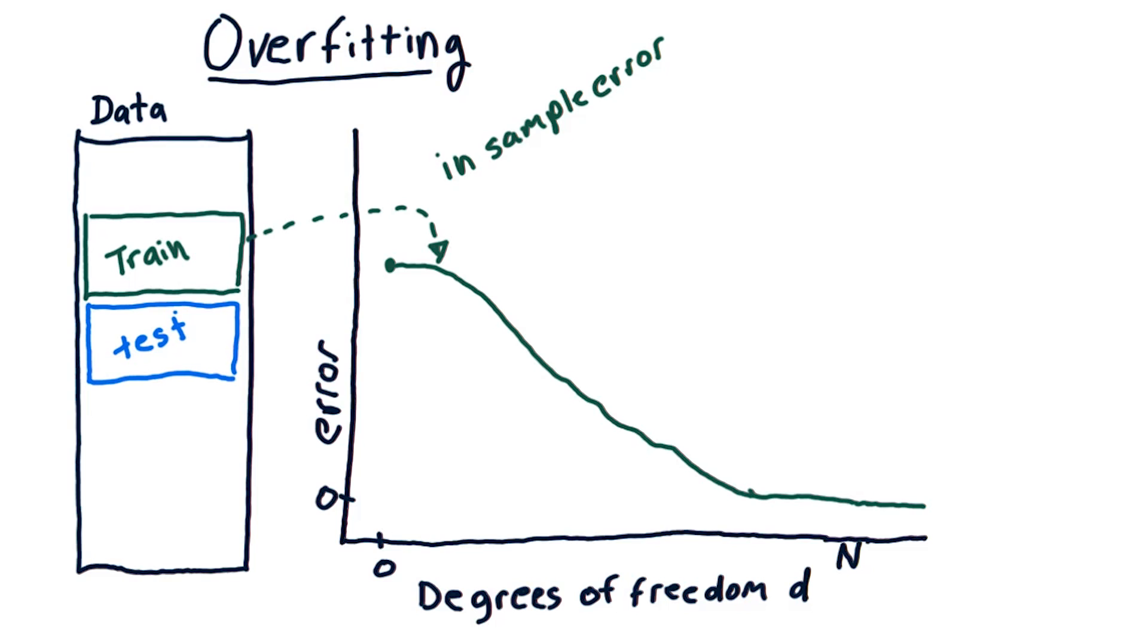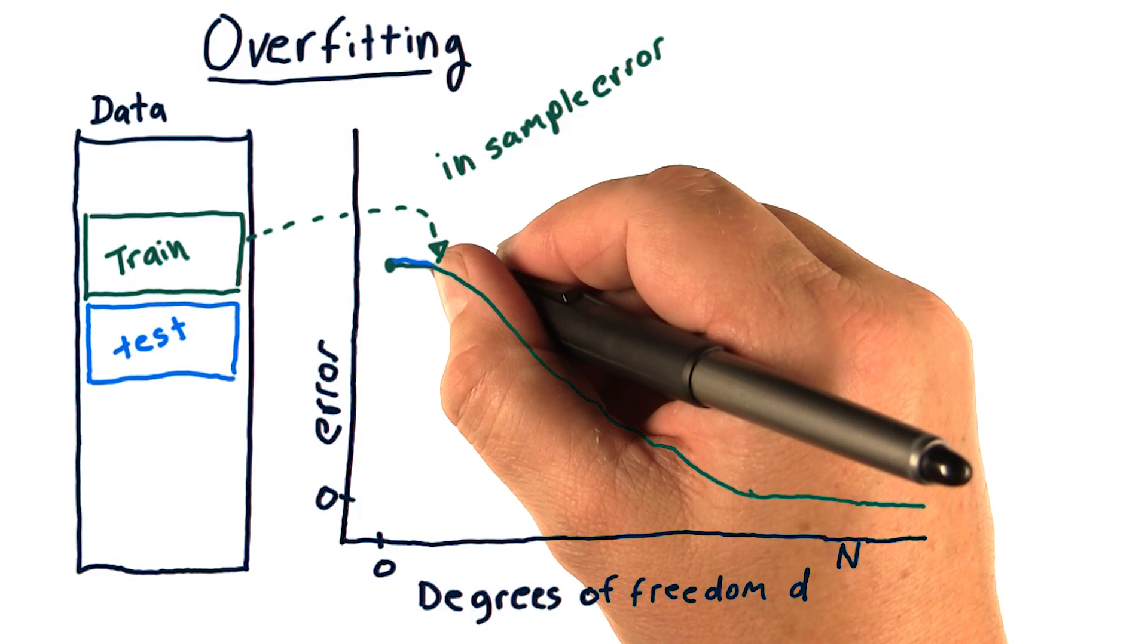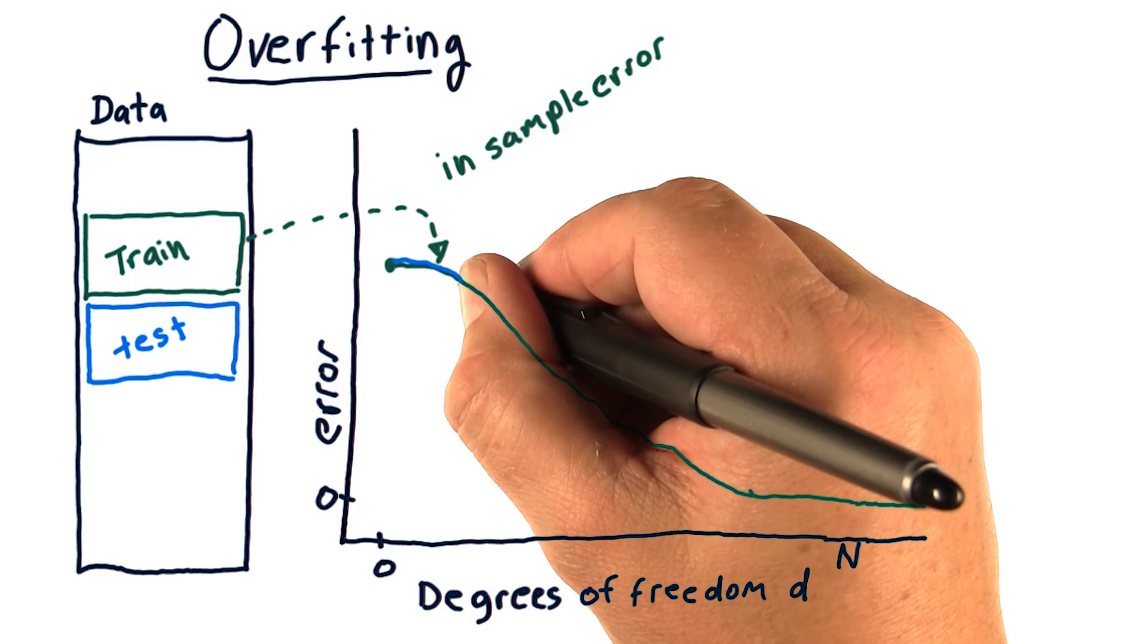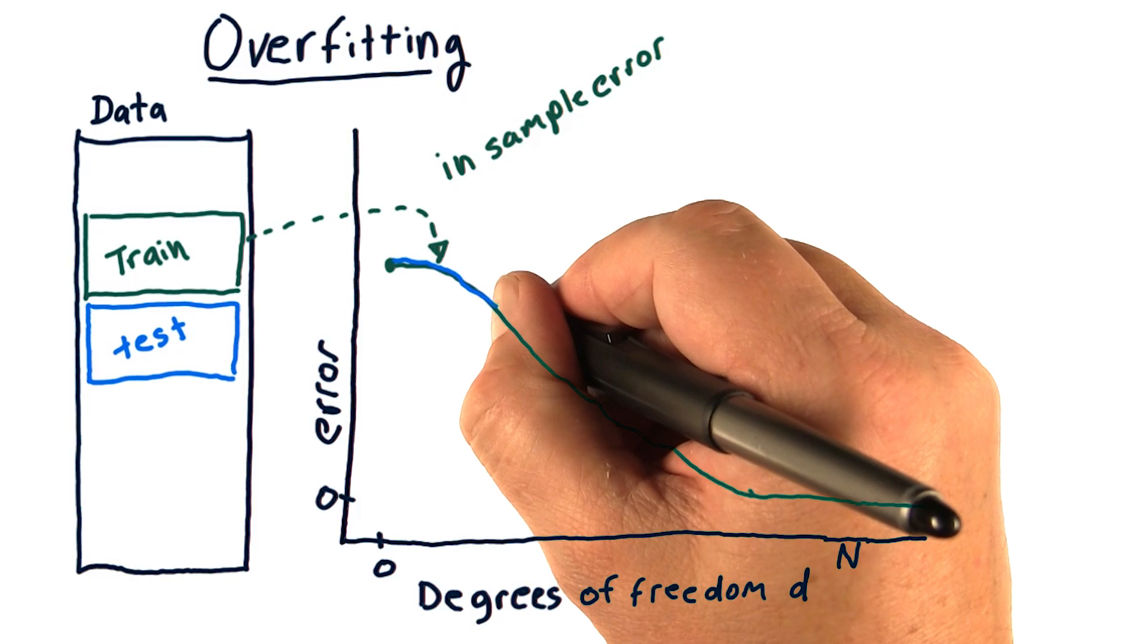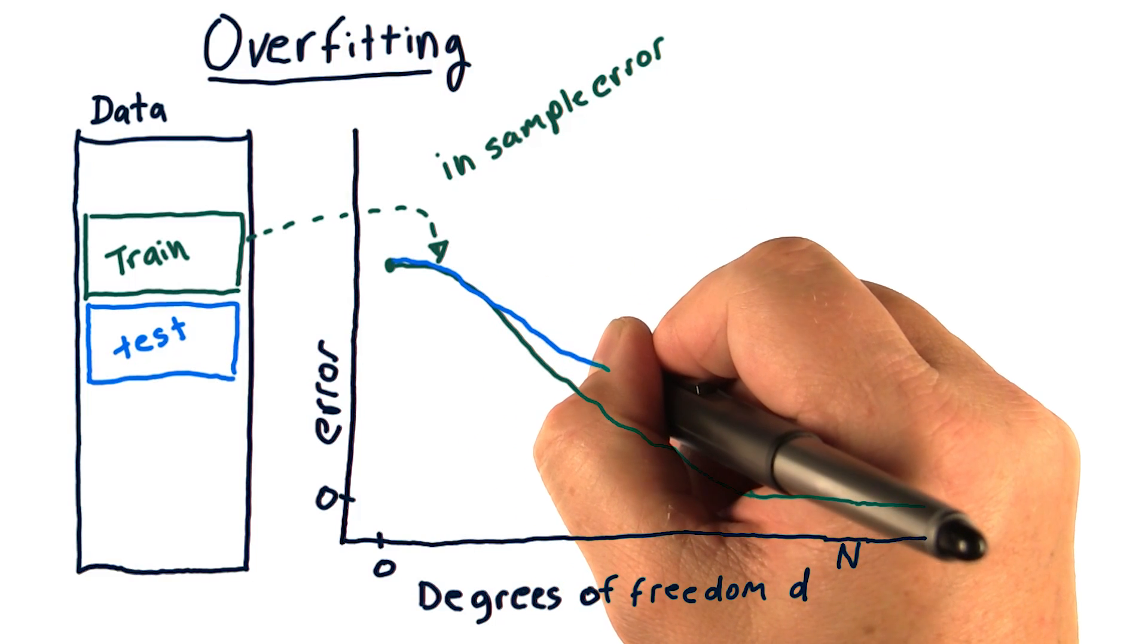Now let's add a similar line for out of sample error. Remember that we expect our out of sample error to always be greater than or equal to in sample error. The curve will look something like this. It'll start out at maximum error about the same as our in sample line. And as we go down, we'll begin to diverge like this.